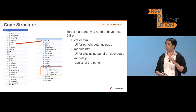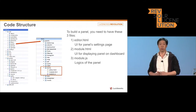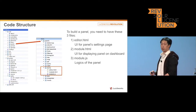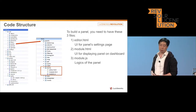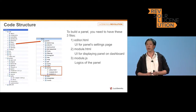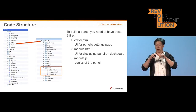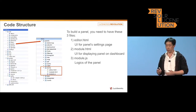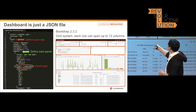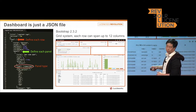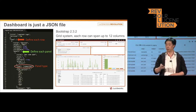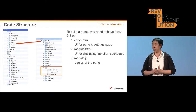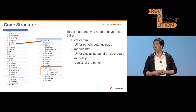That is the minimum requirement for you to have in order to build your own custom panel. Let's take a look at what each file does. The first one, editor.html, is used for rendering the configuration of your panel. You can see in the dashboard — if you take a look at a panel — there's a small gear icon. That is the editor panel. Whatever you put inside editor.html is going to show up in that panel configuration UI.